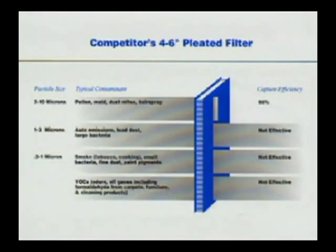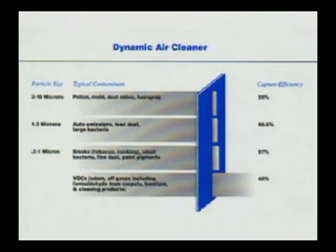Which means all of the harmful submicron particles are staying in the air you breathe. To effectively clean the air, the submicron particles must be removed. Dynamic air cleaners remove up to 97% of dangerous airborne particles down to 0.3 microns.